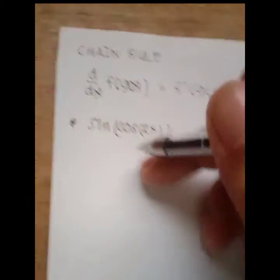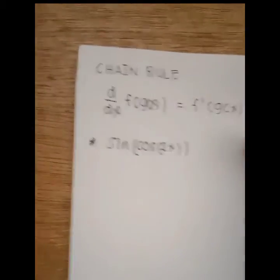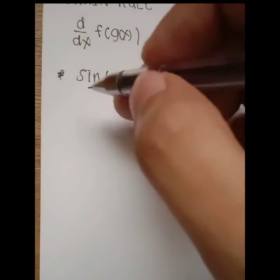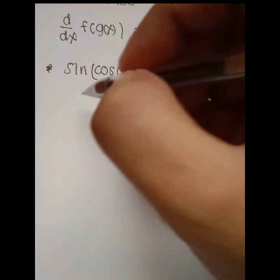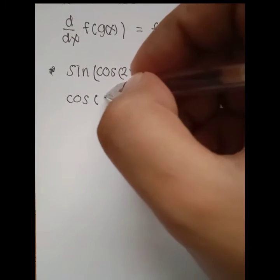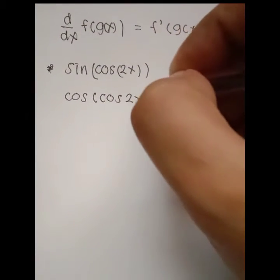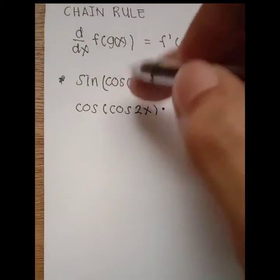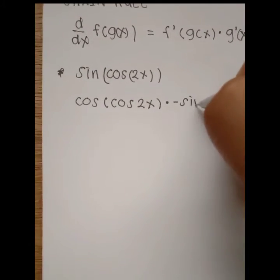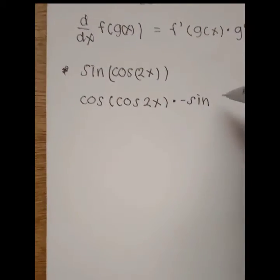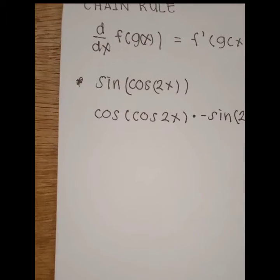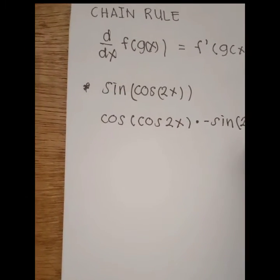For this given example we are going to derive using chain rule. First, the derivative of sine is cosine — so we write cosine, then copy the inside function which is cosine 2x, times the derivative of the inside function. The derivative of cosine is negative sine, so copy its inside function which is 2x, times the derivative of 2x.